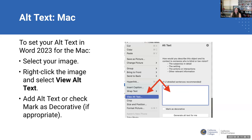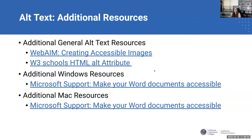Similarly on the Mac, select your image, right-click the image, and a menu comes up where you can choose 'View Alt Text'. Then similarly to the Windows version, you can type in your alternative text, or if it's just decorative flowers to make the page look pretty, you can mark it as decorative. And then we have a couple more links here.